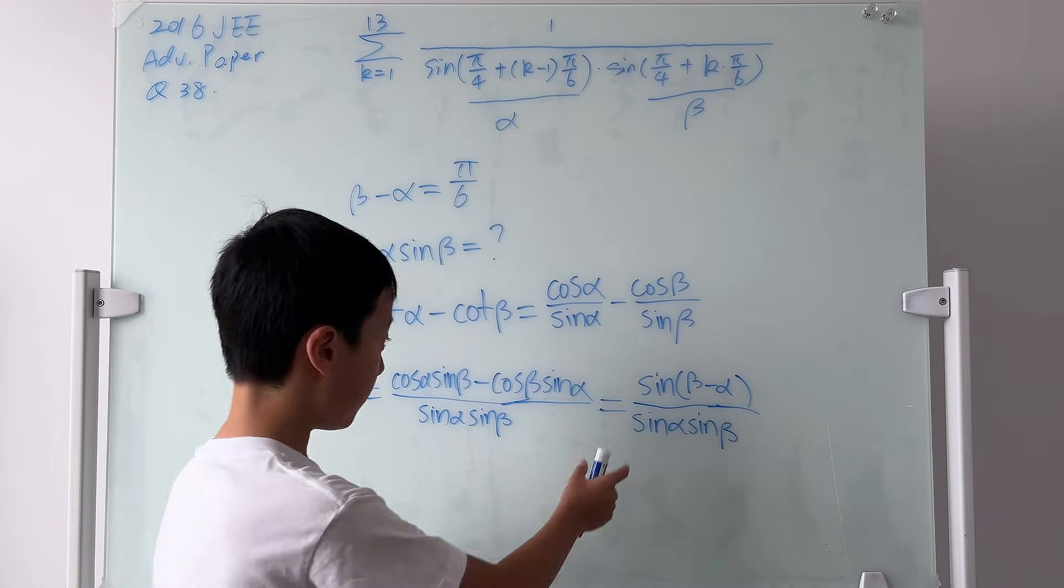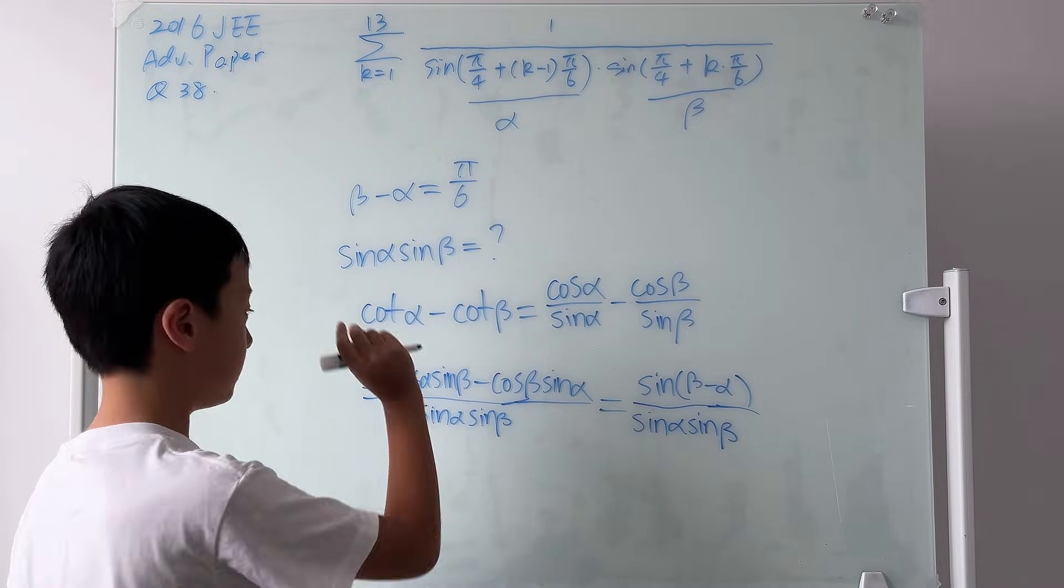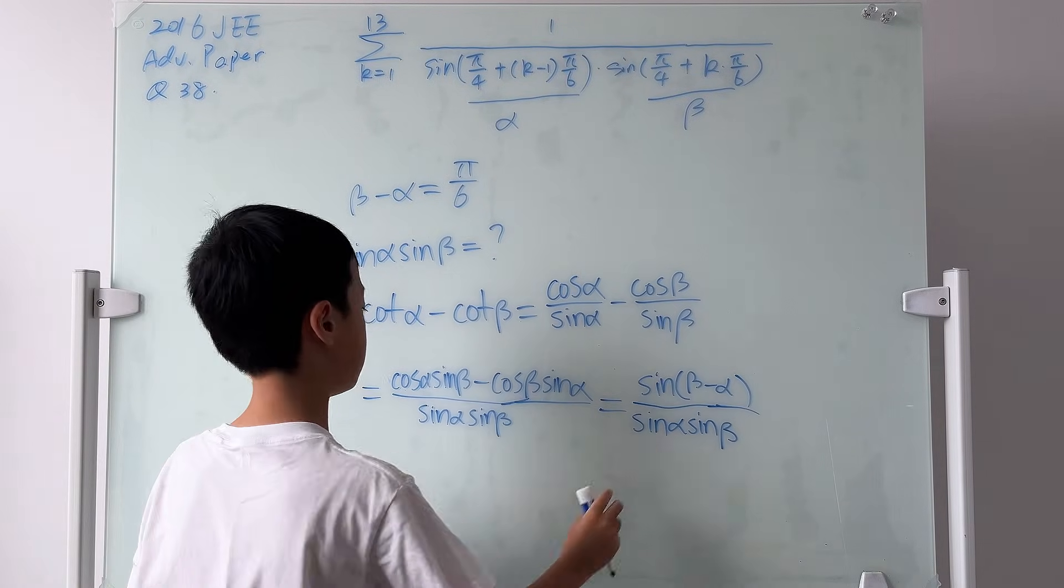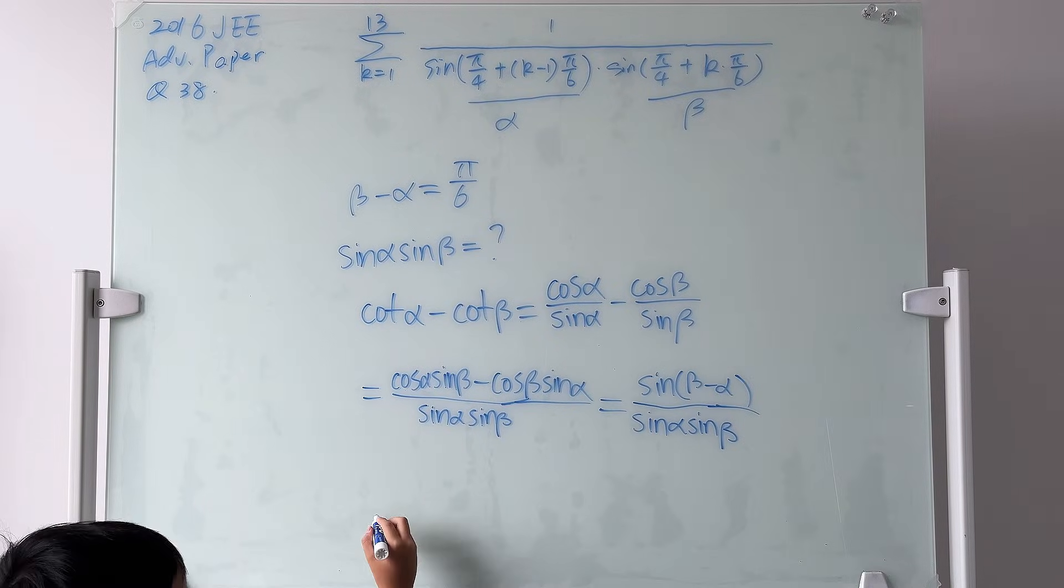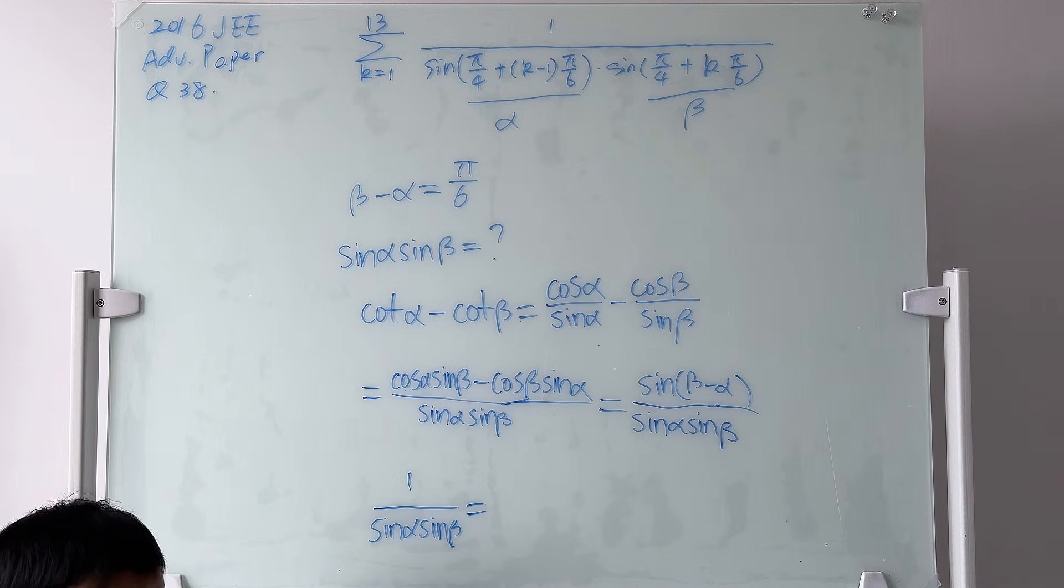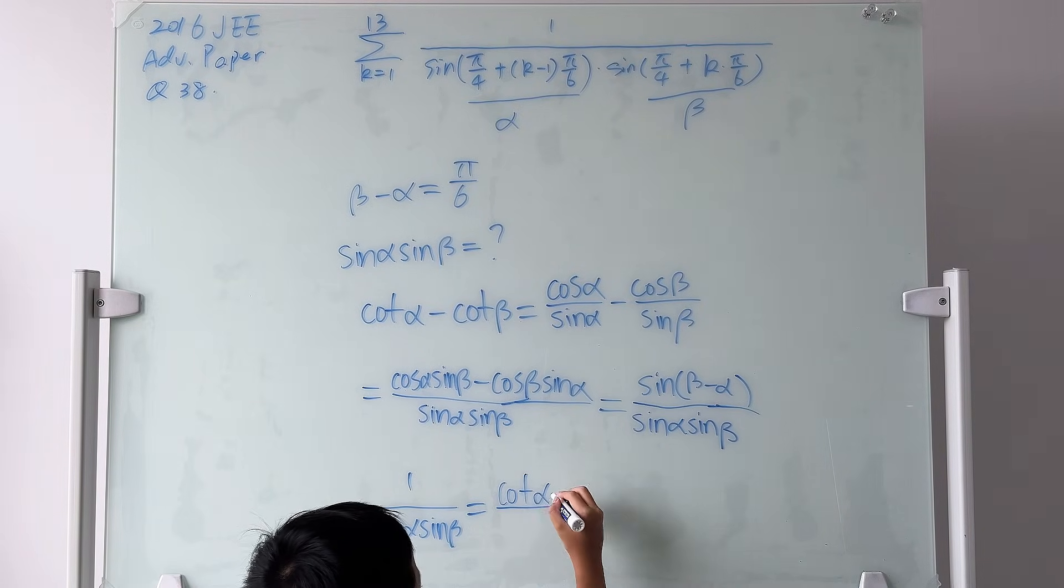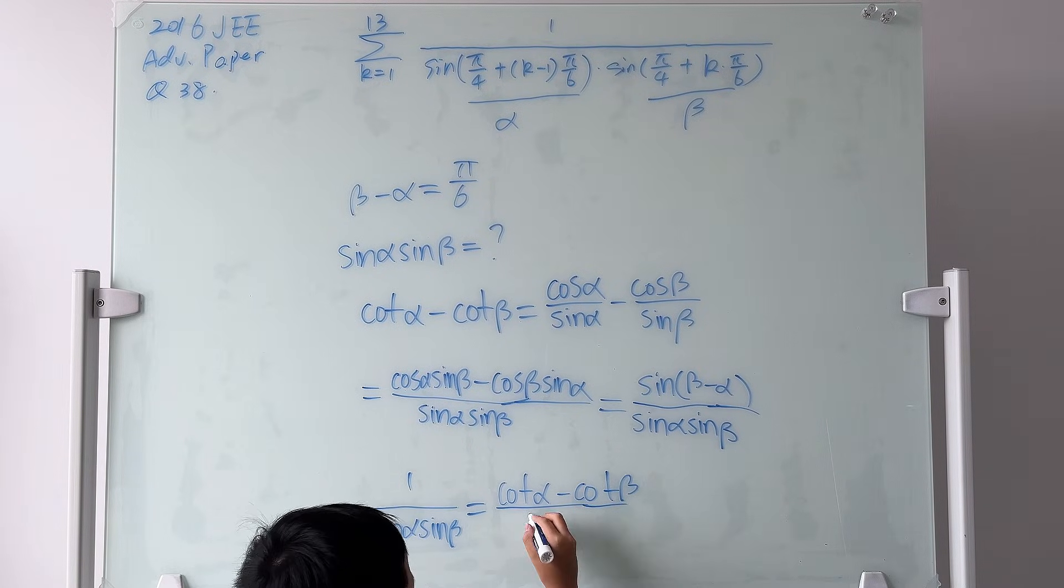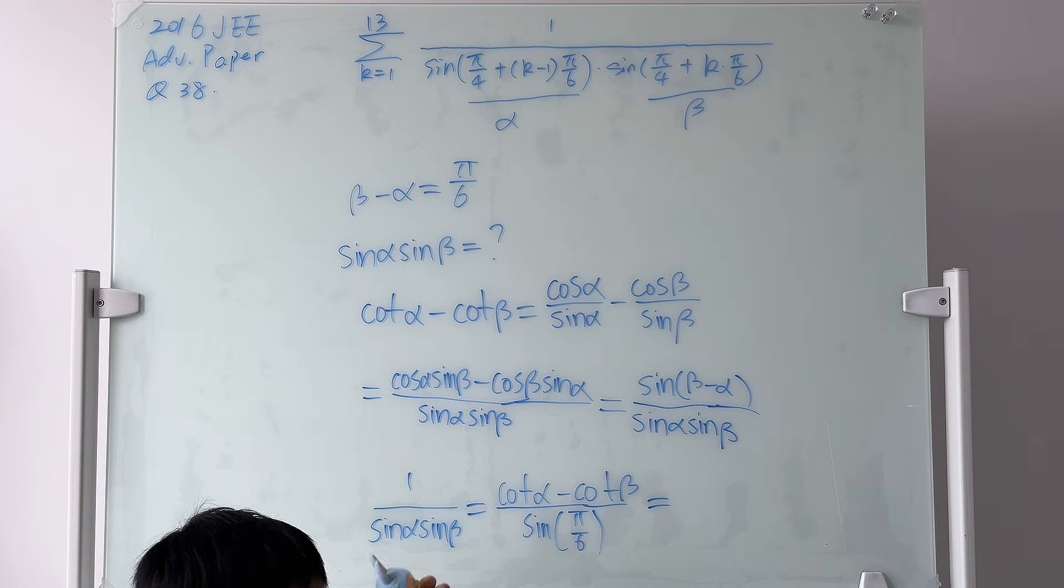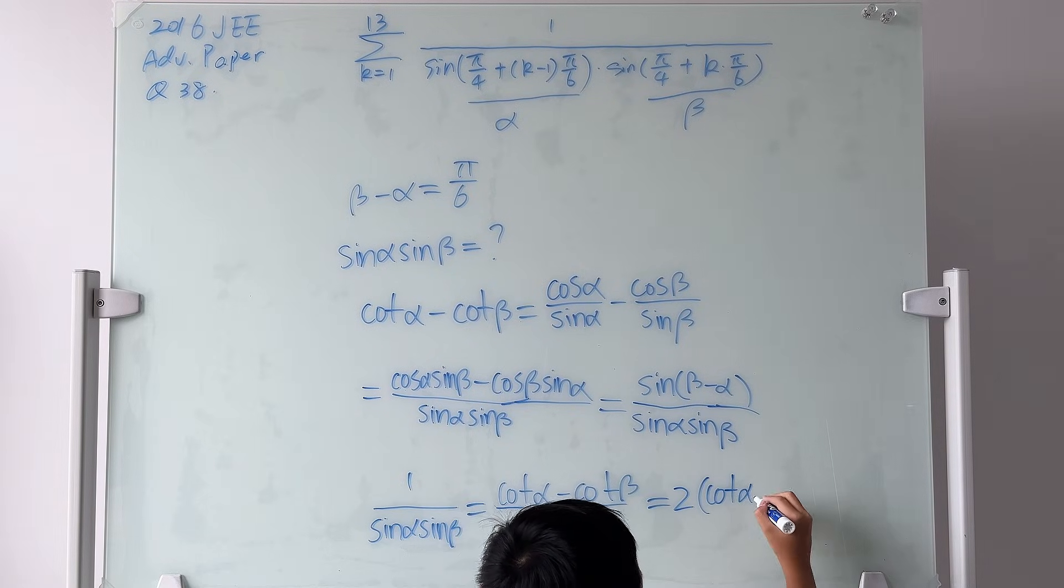Now look, we have beta minus alpha, and we have sine alpha sine beta. But what we're actually looking for is just the reciprocal of sine alpha times sine beta. And we actually do have that. So cotangent alpha minus cotangent beta equals to this. So we know that 1 over sine alpha sine beta will equal to cotangent alpha minus cotangent beta over sine of beta minus alpha. So it's just the top being cotangent alpha minus cotangent beta and the bottom being sine of pi over 6. And this is equal to, sine of pi over 6 is 1 over 2. You can put the 2 at the top. So it's just 2 times cotangent alpha minus cotangent beta.